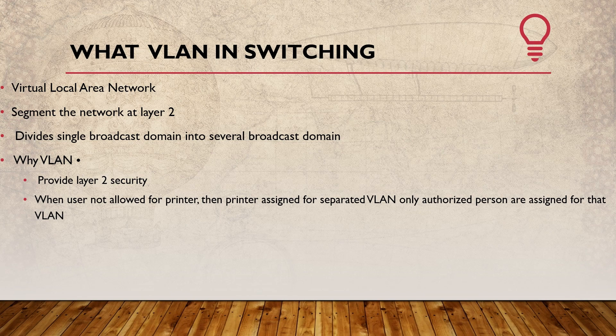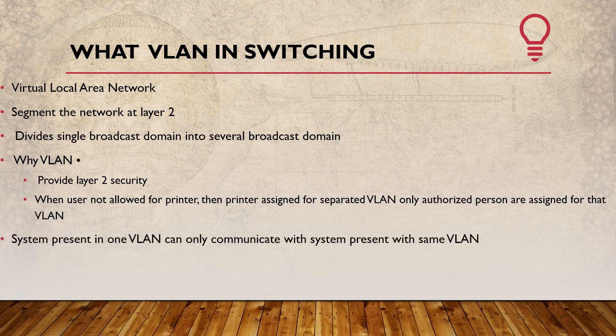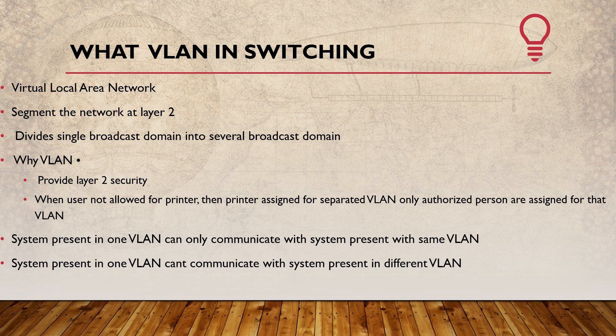The Sales team and Marketing team network communication is restricted between VLANs. A system present in one VLAN can only communicate with systems in the same VLAN. For example, Machine A on the Sales VLAN and Machine B on the Sales VLAN can communicate. But if System A is on the Sales VLAN and System B is on the Marketing VLAN, Layer 2 communication between them is not possible directly.